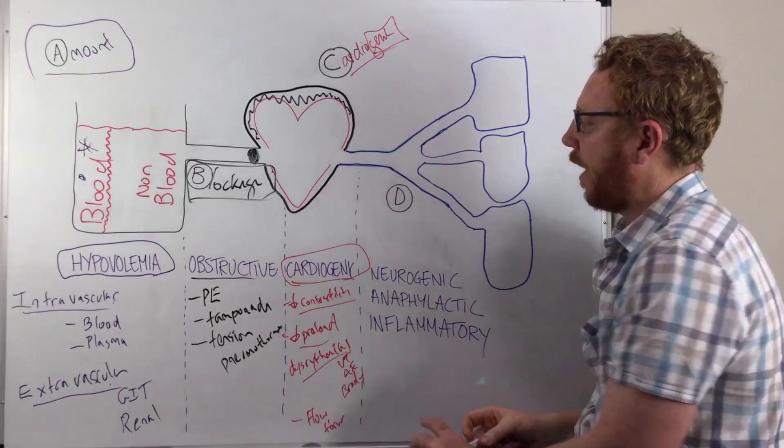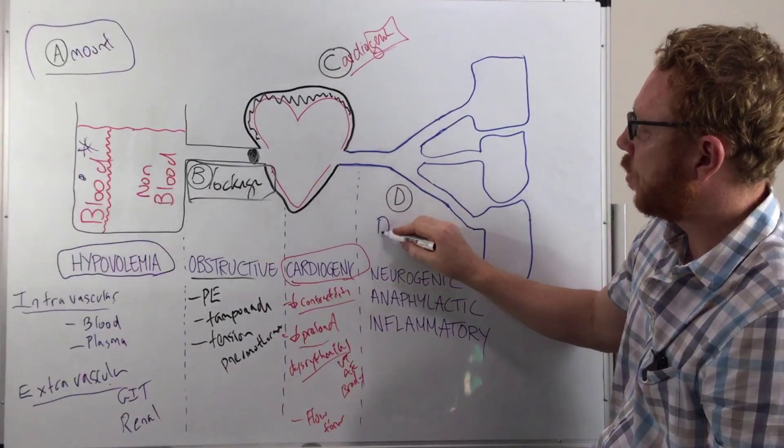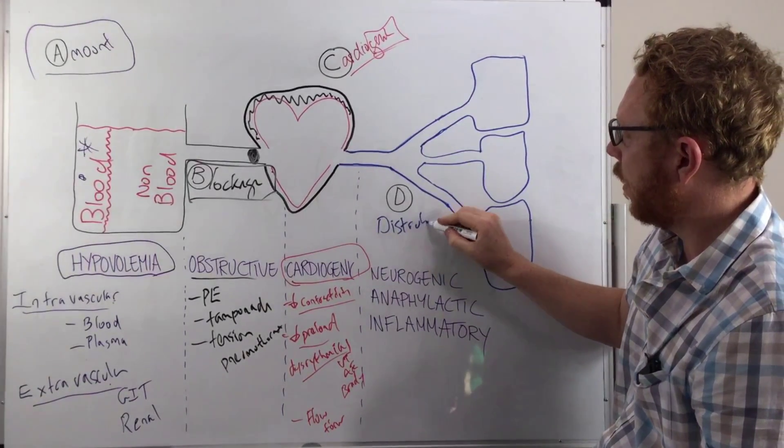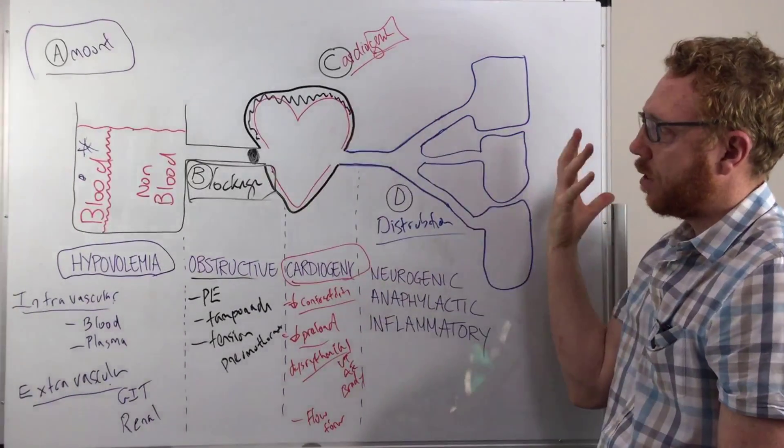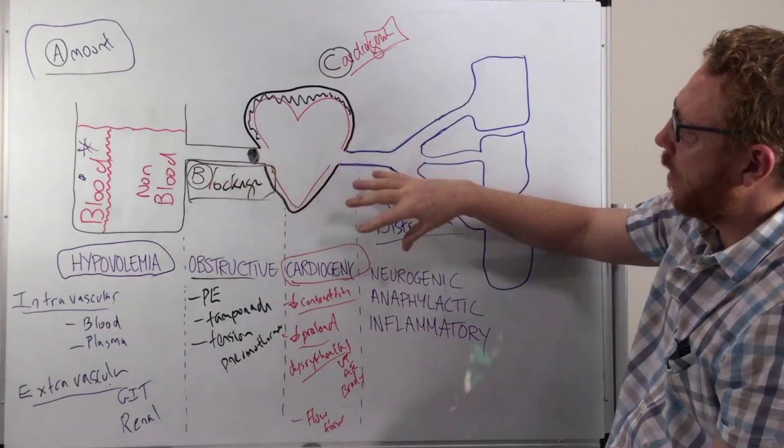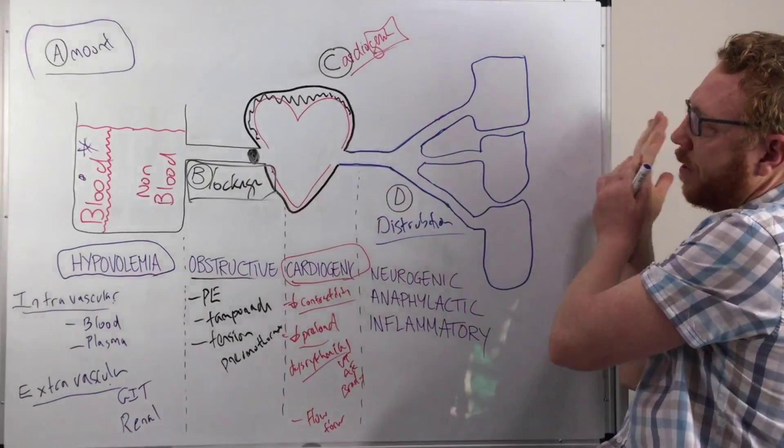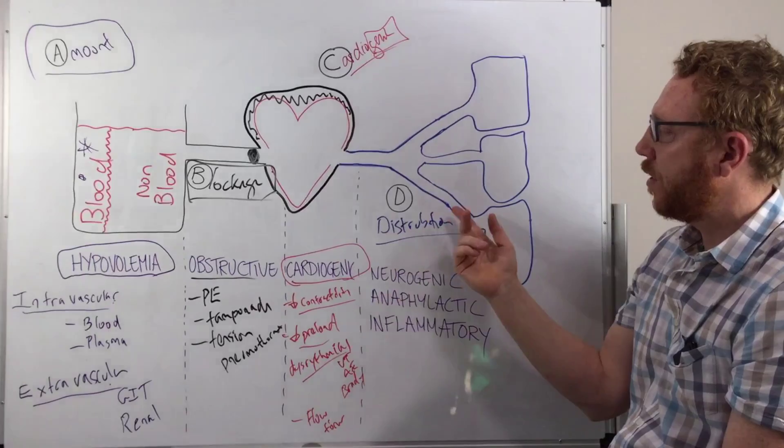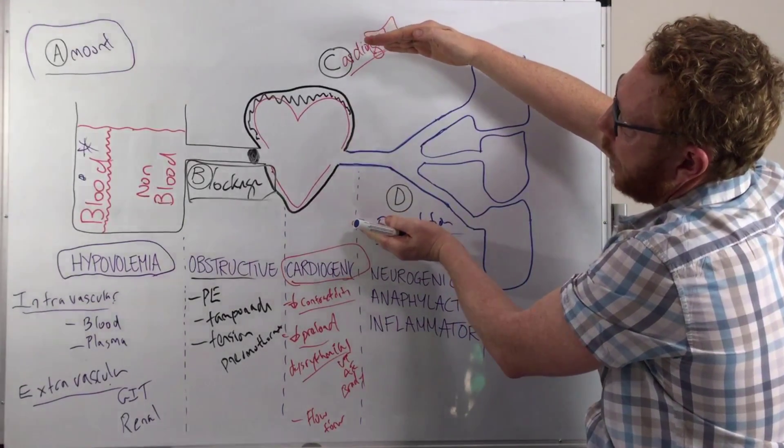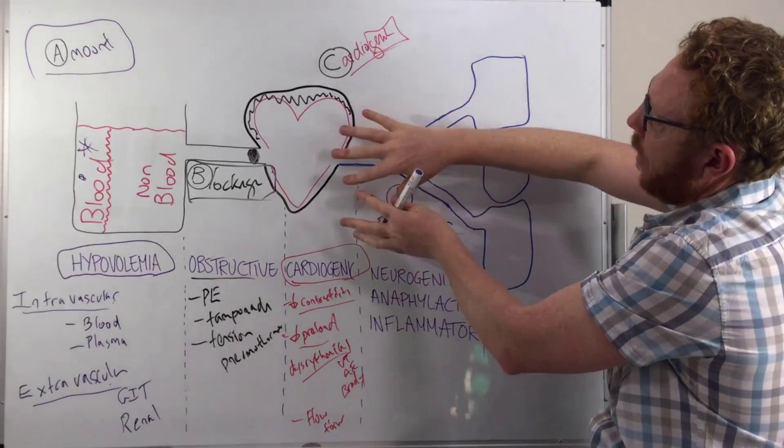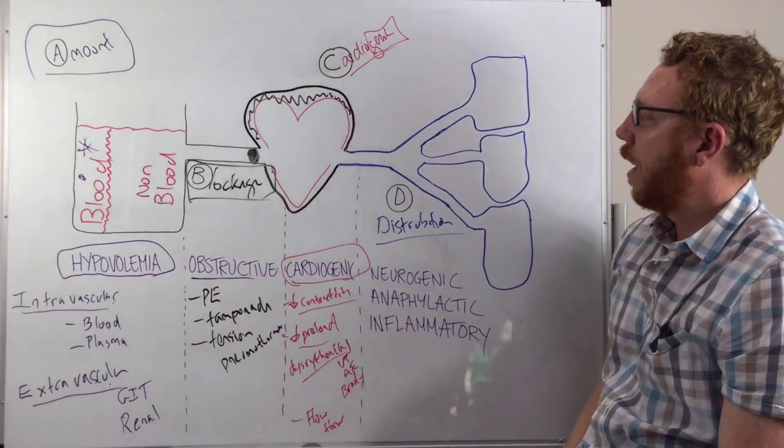So lastly, we're left with D. D for distribution. So what this means is you're not distributing blood out to the tissues. So all this side is okay, but the blood going out to the tissues is an occurrence. This is a distribution shock. What usually happens here is the blood vessels just get really big. They dilate. That means the flow out is really poor.